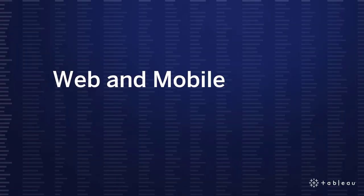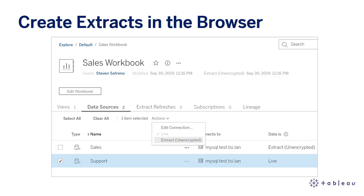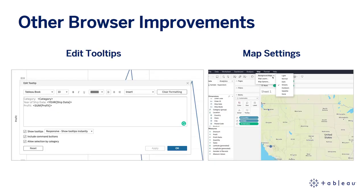Last up, let's turn to web and mobile. You can now create extracts in the browser — skip the desktop and head straight to Tableau Server or Tableau Online to save time and give your laptop a break. We have two other browser improvements as well. You can now edit tooltips while in web authoring mode, so stay in the data flow and create and update tooltips all from the web. Additionally, you can update map settings from the browser, so stick in web authoring mode to update backgrounds, styles, layers, and more.